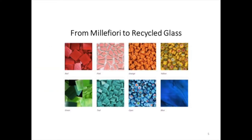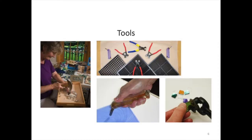But then they started creating what is called tesserae — square pieces that they made using a hammer and hardie. Today we are looking at recycled glass, Murano millefiore, and stained glass. This is a sample of the hammer and hardie. Stained glass uses something like a pistol grip cutter, and then we use glass wheel cutters for glass.